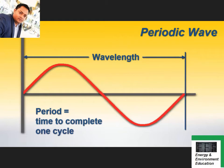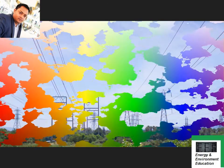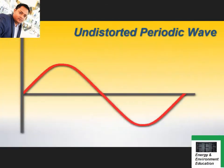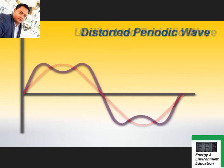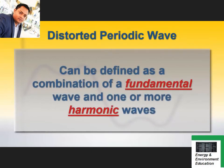Periodic waves are found in a wide variety of natural phenomena, including ocean waves, sound, and light. Electricity transmitted over the public power grid can also be graphed as periodic waves. A perfectly regular and symmetrical sine wave represents a clean example. In the real world, however, periodic waves are subject to numerous influences that can affect their shapes, producing distortions and asymmetries.